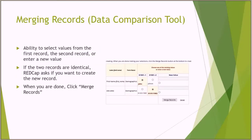This is the screen you get when you try to merge the two records. For those that are different, you can select which one's correct. I selected 'John' from data entry one, and found that data entry number two was correct with the year 1982, so I selected that. If neither one was correct, you can select a third option to enter a new value and merge the record as a new third record.